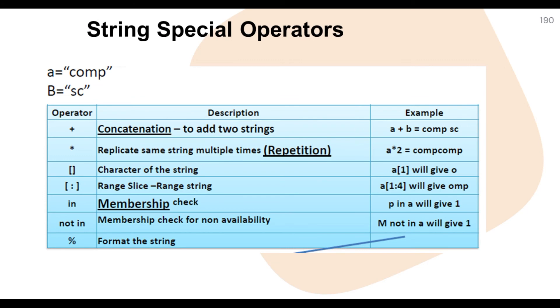Now we are going to understand format strings. A format string is a special type of string by which we can specify the format symbol for particular data types, like decimal integers.